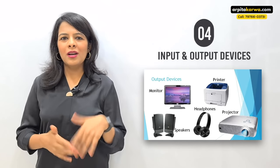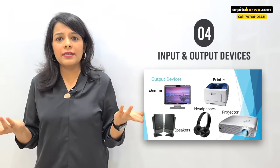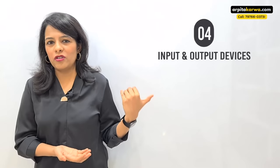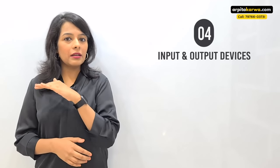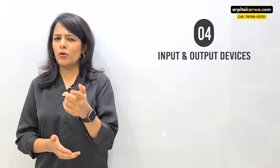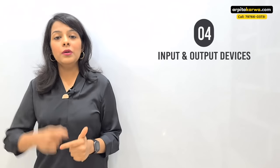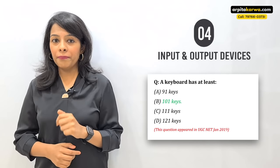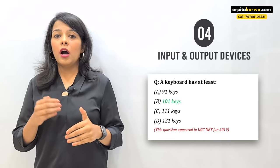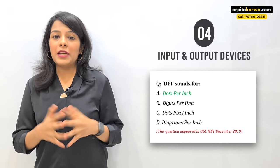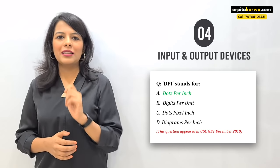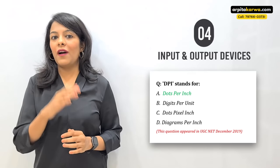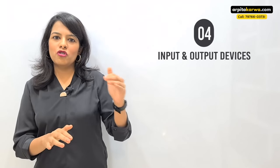This might seem like a sixth-grade topic, but UGC NET does ask questions from it — just not basic ones. They ask tricky questions, for example: how many keys are there in a keyboard? Or what is the full form of DPI (dots per inch), which is a term related to printers? So it's not enough to just know the names of input and output devices; you need to study them in detail.